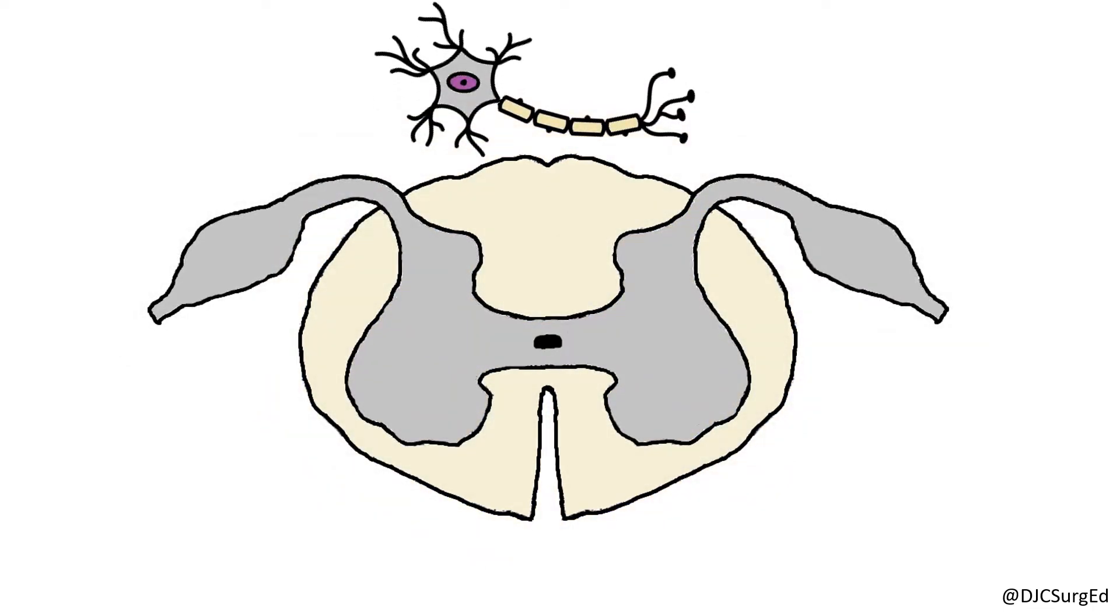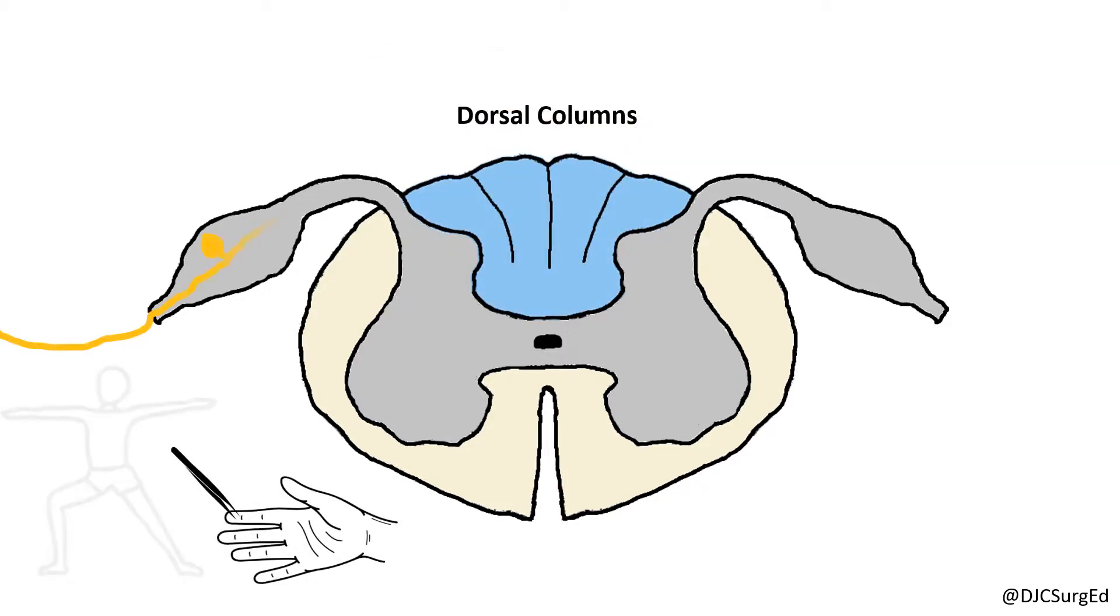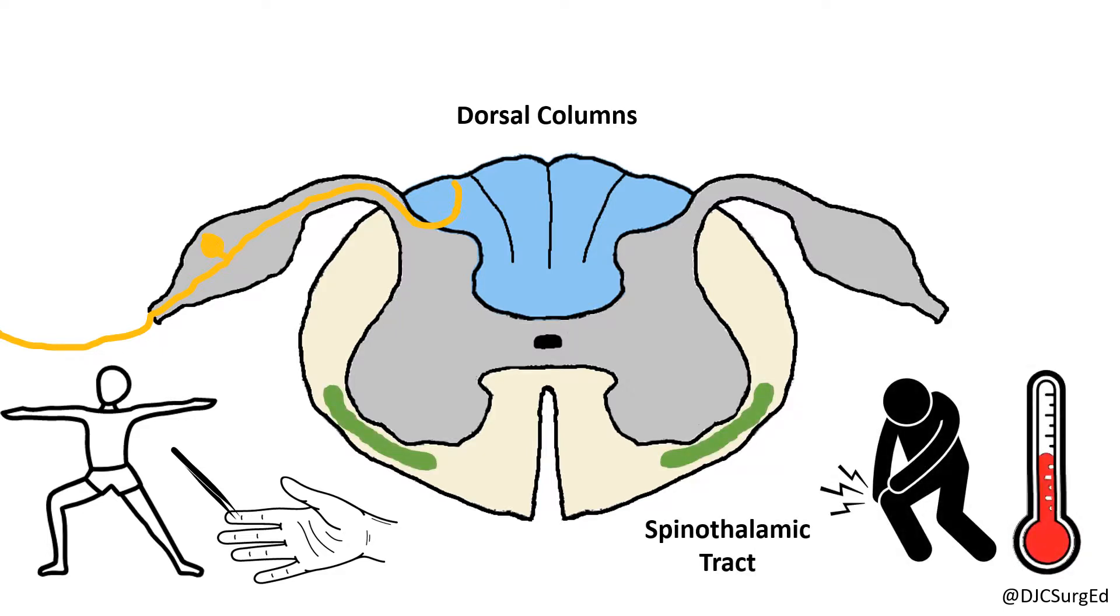The dorsal columns transmit sensory information about fine touch and proprioception to the brain and are located posteriorly and centrally. The spinothalamic tract conveys the sensation of pain and temperature and is located anterior laterally. These fibers synapse within the dorsal horns and decusate before ascending within the anterior lateral tracts.